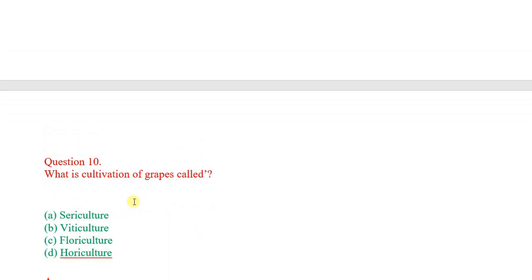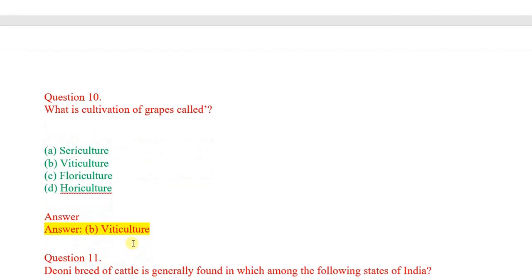Question number 10: What is cultivation of grapes called? Options: sericulture, viticulture, floriculture, horticulture. Correct answer: viticulture.